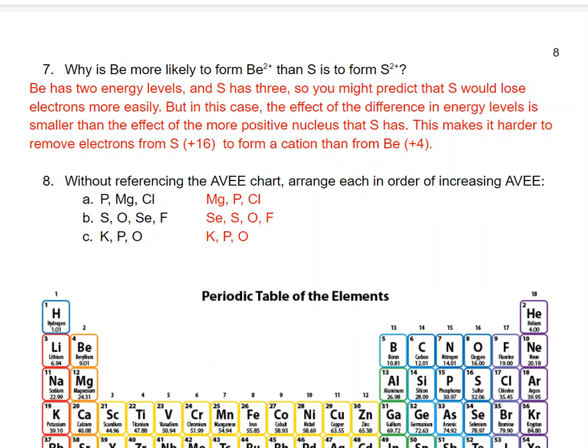Why is Be more likely to form Be²⁺ than S is to form S²⁺? Be has 2 energy levels whereas S has 3, so you might predict S would lose electrons more easily. But the effect of the difference in energy levels is smaller than the effect of the more positive nucleus that sulfur has. This makes it harder to remove electrons from sulfur with its +16 nuclear charge to form a cation than from Be, which only has a +4 nuclear charge.